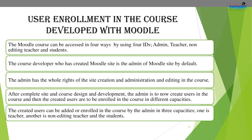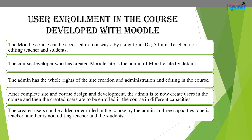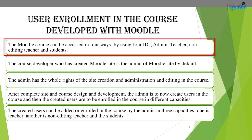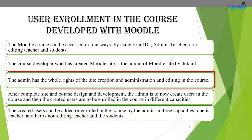Now let us discuss the next very important step — user enrollment in the course. User enrollment in a Moodle course is a very important aspect. The Moodle course can be accessed in four ways using four types of user IDs: admin, teacher, non-editing teacher, and student. The course developer who created the Moodle site is the admin by default.